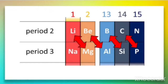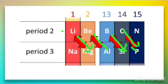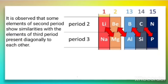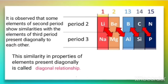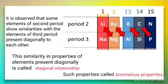The elements of the second period show similarity to their diagonal elements in the third period. For example, lithium shows similarity with magnesium, beryllium with aluminium, and boron with silicon. This similarity in properties of elements present diagonally to each other is called the diagonal relationship. Such properties are called anomalous properties.